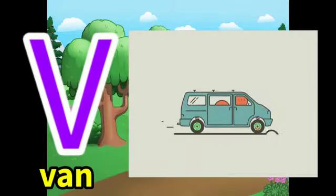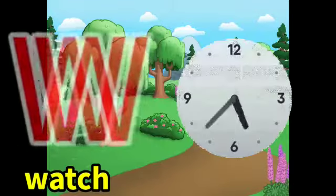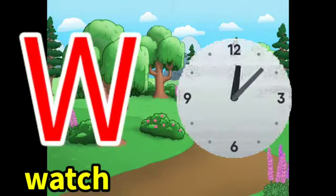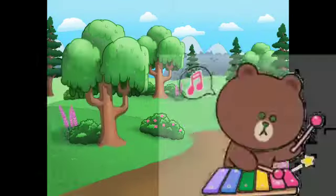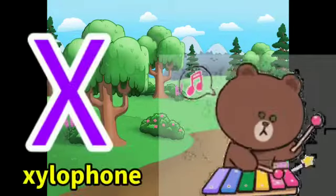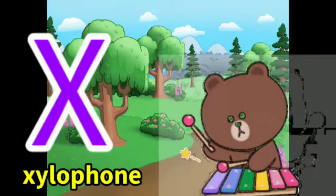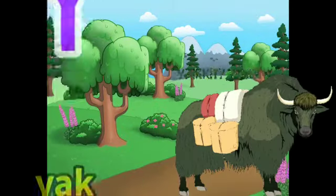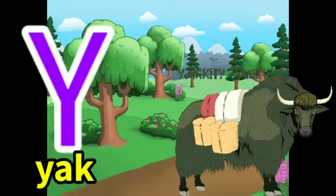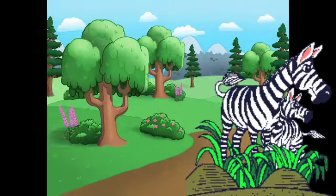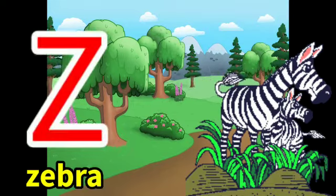B for gun, W for goats, X for zolophone, Y for yacht, Z for zebra.